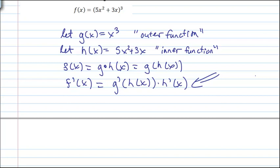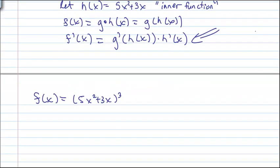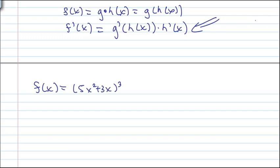So, what we have is f of x equals 5x squared plus 3x, all cubed. And all I'm going to do is to invoke the chain rule.